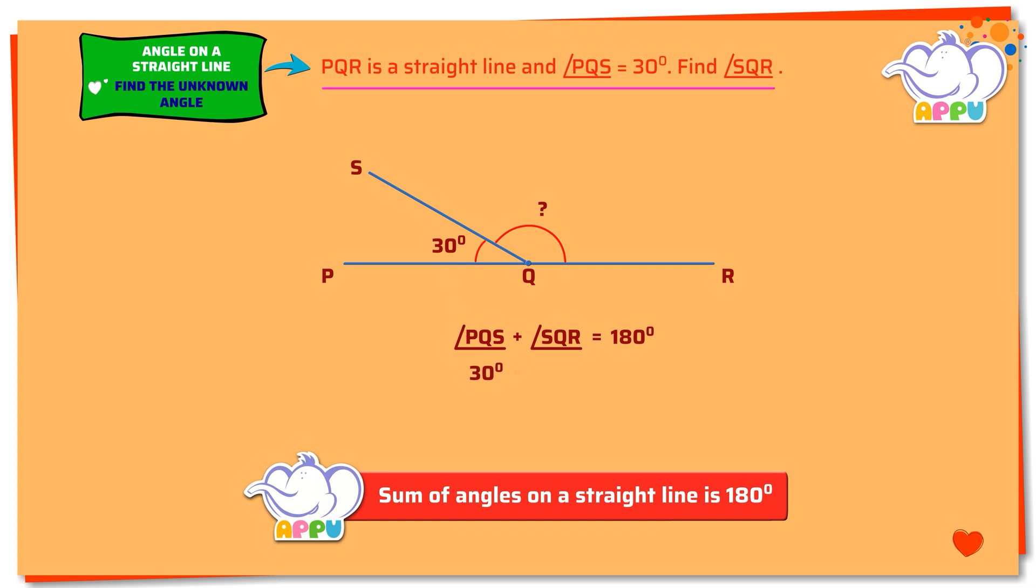30 degrees plus angle SQR equals 180 degrees. Next, we subtract 30 degrees from both sides. We get angle SQR equals 180 degrees minus 30 degrees. That is equal to 150 degrees. Angle SQR equals 150 degrees.